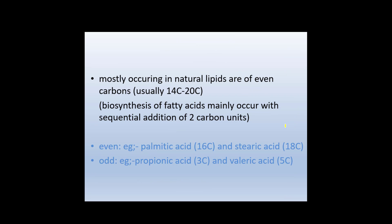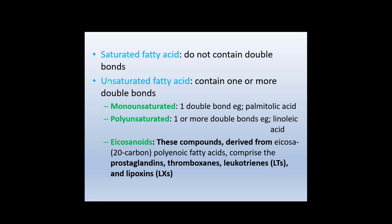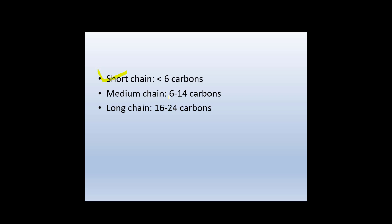Most naturally occurring fatty acids have an even number of carbons because biosynthesis occurs by sequential addition of two carbons — for example, palmitic acid has 16 carbons and stearic acid has 18 carbons. Odd-carbon fatty acids include propionic acid (3 carbons) and valeric acid (5 carbons). Saturated fatty acids contain no double bonds; unsaturated fatty acids contain one or more double bonds. Monounsaturated means one double bond, e.g., palmitoleic acid. Polyunsaturated means two or more double bonds, e.g., linoleic acid. Short chain: fewer than 6 carbons; medium chain: 6–14 carbons; long chain: 16–24 carbons.